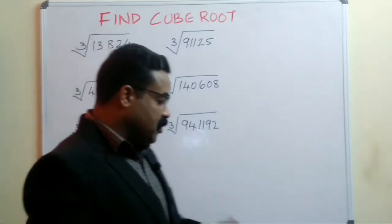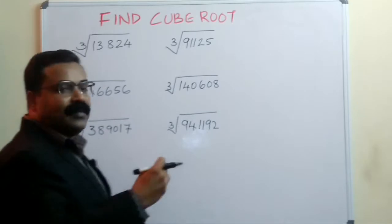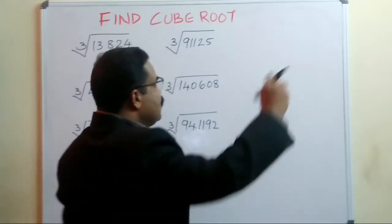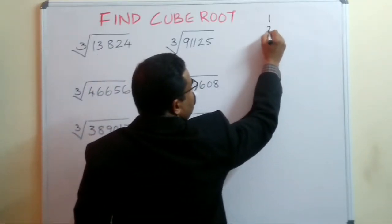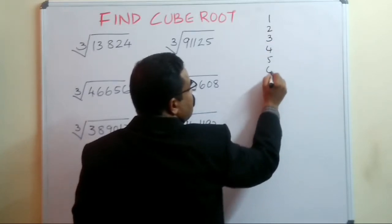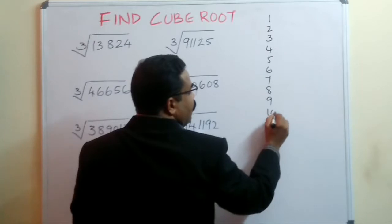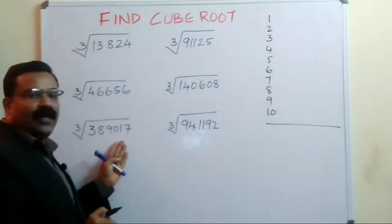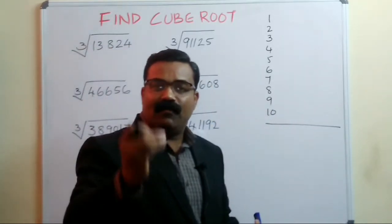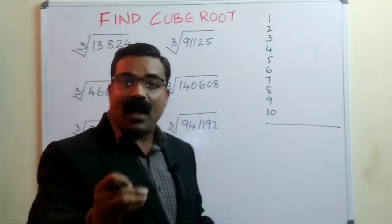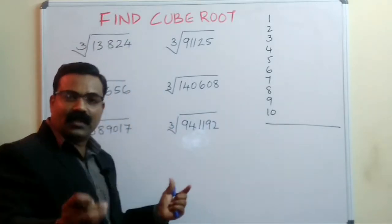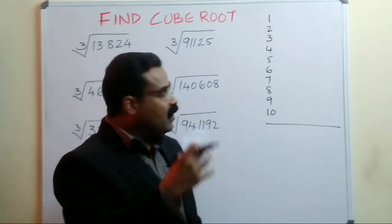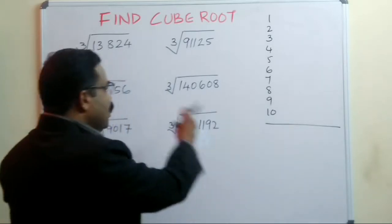When we talk about cube root, the main thing we should understand is the cubes of the first ten numbers. If you remember the cube of these ten numbers, you can find out the cube root of any number within three seconds. First we will see what those cubes are, and from that we will derive the trick.